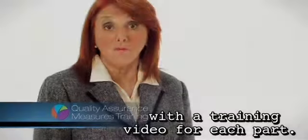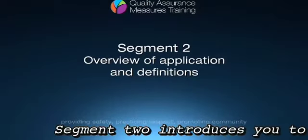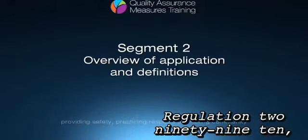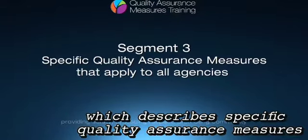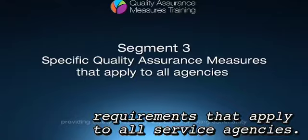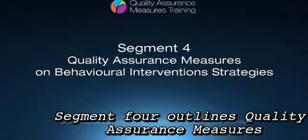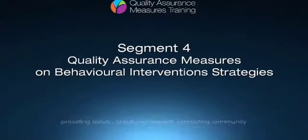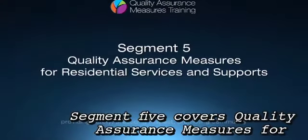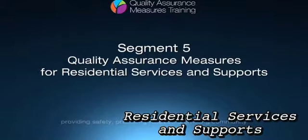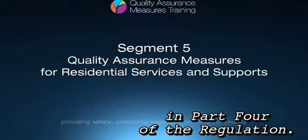The Regulation is divided into five parts, with a training video for each part. Segment 2 introduces you to Regulation 299-10, as well as the definitions and application. In Segment 3, our focus is on Part 2 of the Regulation, which describes specific quality assurance measures requirements that apply to all service agencies. Segment 4 outlines quality assurance measures on behavioural intervention strategies in Part 3 of the Regulation.